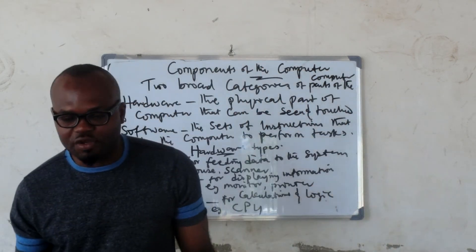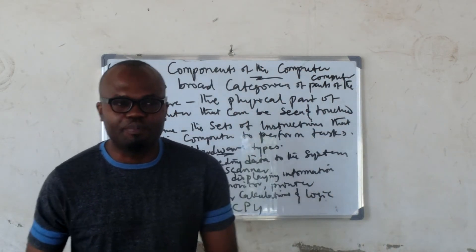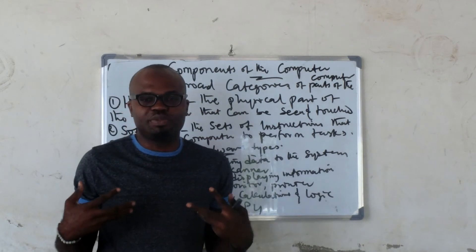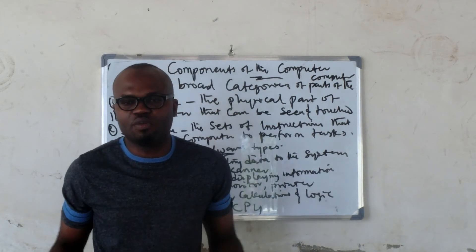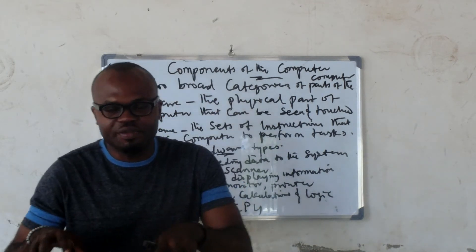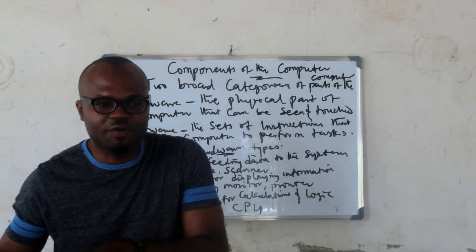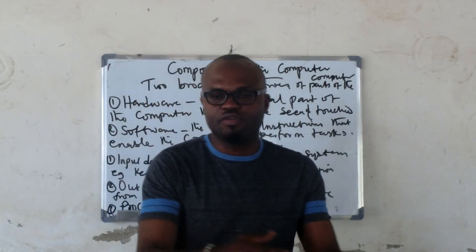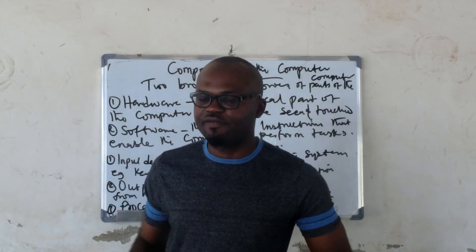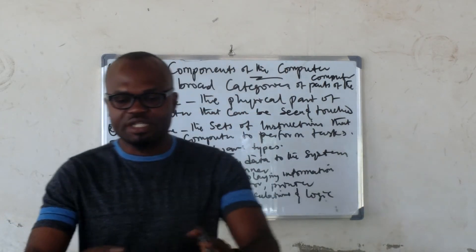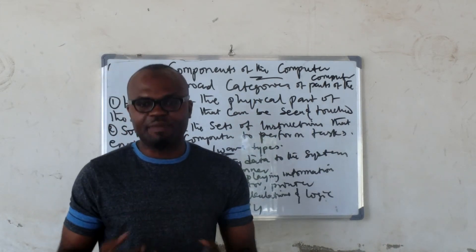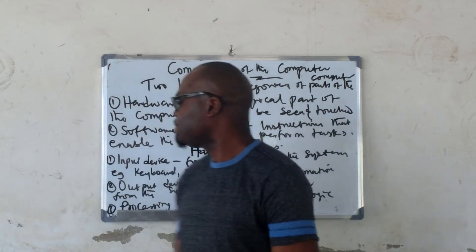Then that part of the computer that you use to bring out something from the computer, call them the output hardware devices. The monitor that you use to see what you have already typed is also an output device.